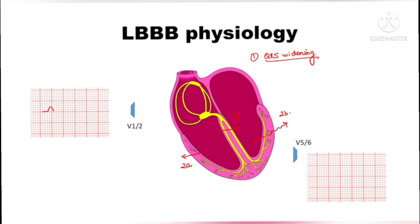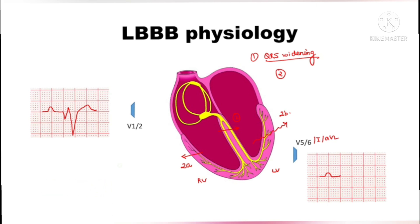How does LBBB appear on the right-sided leads? After the P wave, there is a small negative deflection due to depolarization moving away, then a small positive deflection from right ventricular depolarization, followed by a deep negative deflection from left ventricular depolarization. On left-sided leads — V5, V6, lead I, and AVL — after the P wave, there is a loss of the septal Q wave, because the septum now depolarizes right to left. This produces a positive deflection, a small negative deflection, then a positive R wave — representing loss of septal Q waves in the lateral leads.